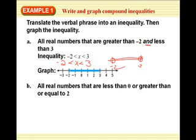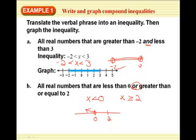All real numbers that are less than 0 OR greater than or equal to 2. Now remember the ORs, they go one way or another. So X is less than 0 or X is greater than or equal to 2. Here's our 0, circle it, we go this way. Here's our 2, circle it, color it in, it goes that way. See the difference between an AND compound inequality and an OR compound inequality.